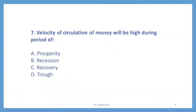Question number 7. Velocity of circulation of money will be high during a period of — whether it is prosperity, recession, recovery, or trough. The correct option is A — prosperity. Because during the prosperity period there is more transaction of goods and services in the economy, so there is more circulation of money, that is why velocity of circulation of money is very high.